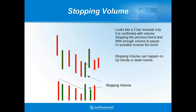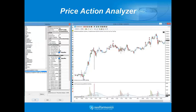Stopping volume can also happen in an uptrend or a downtrend — in an uptrend, it would be the inverse of what you see here. On the price action analyzer, you have one setting each for effort to rise and effort to fall, and two separate settings for stopping volume. Effort to rise is signaled by the green diamond, effort to fall by the red diamond, and stopping volume by the squares shown above.